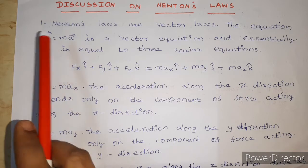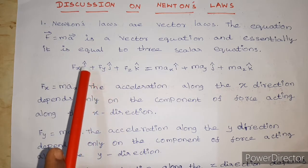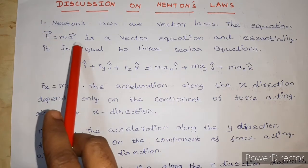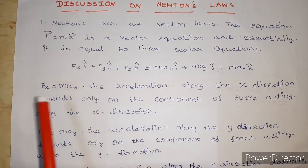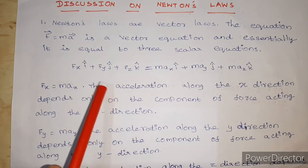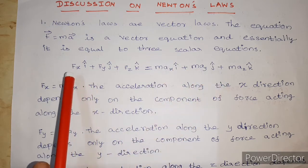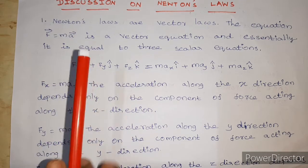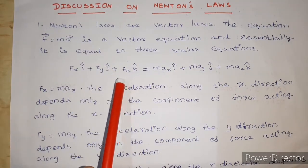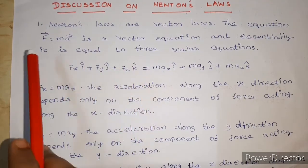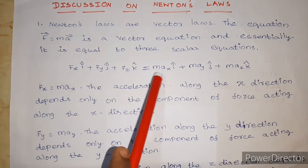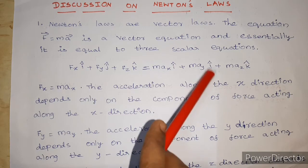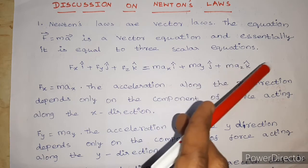How to solve this equation? This is the Cartesian coordinate system. We will solve the scalar equations. Fx i-cap plus Fy j-cap plus Fz k-cap equals M into Ax i-cap plus M into Ay j-cap plus M into Az k-cap.